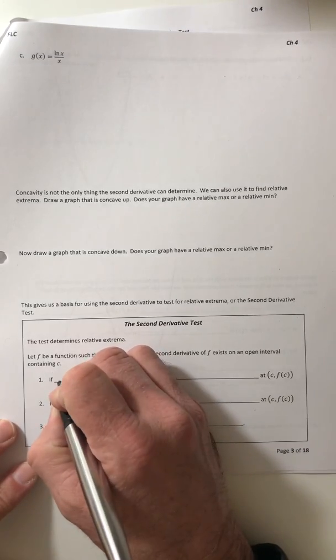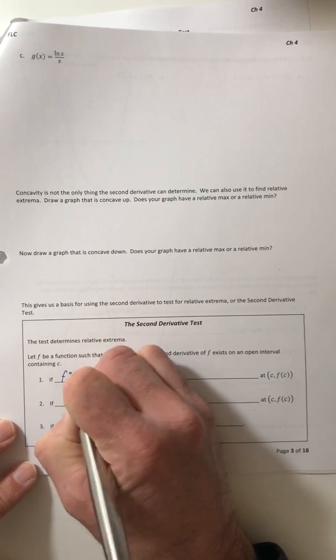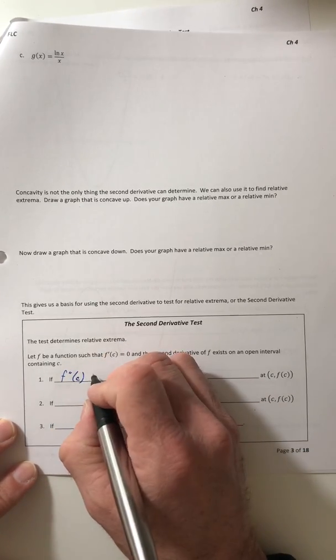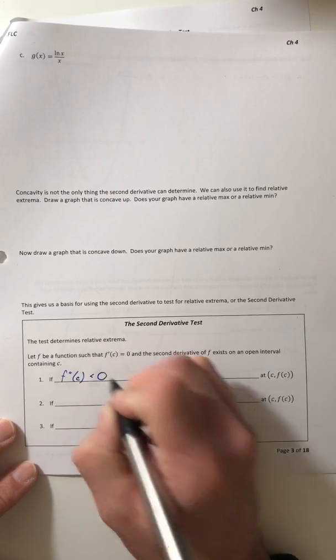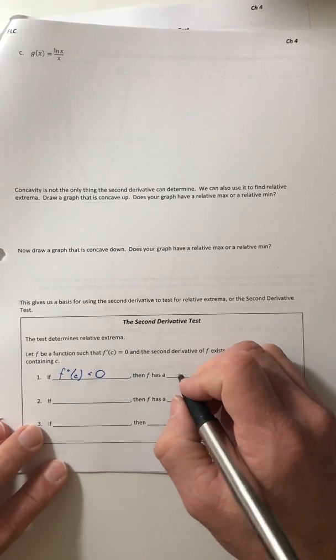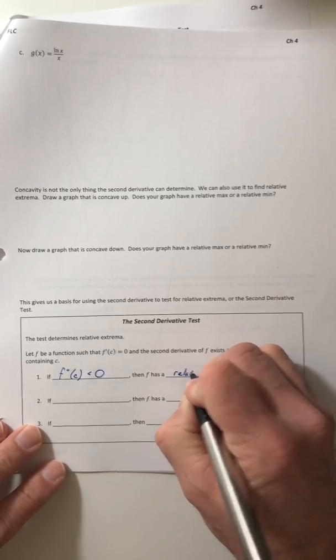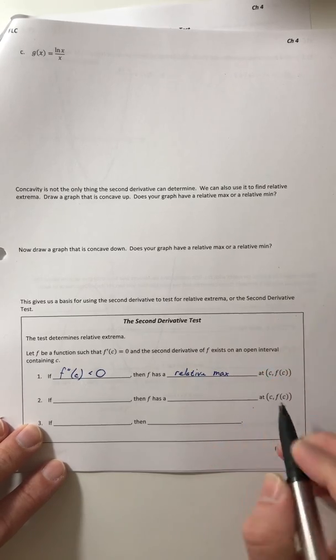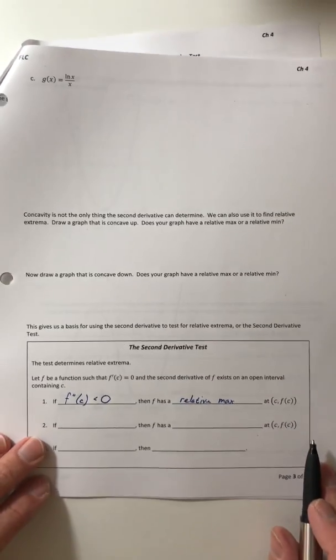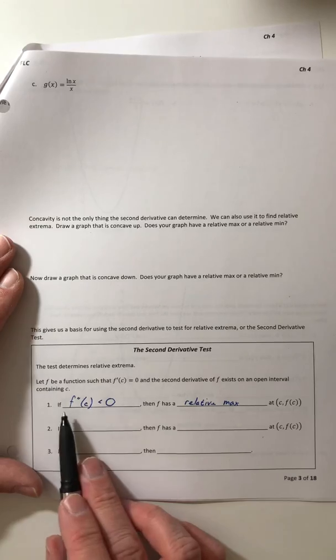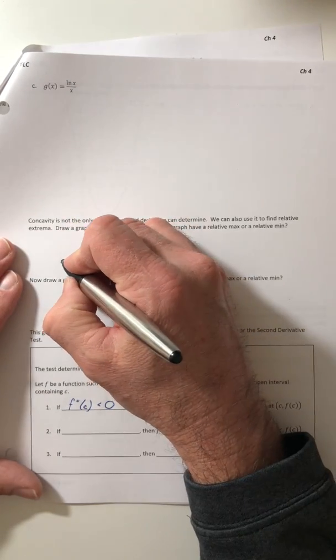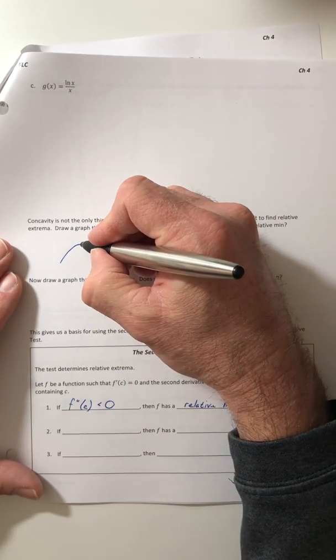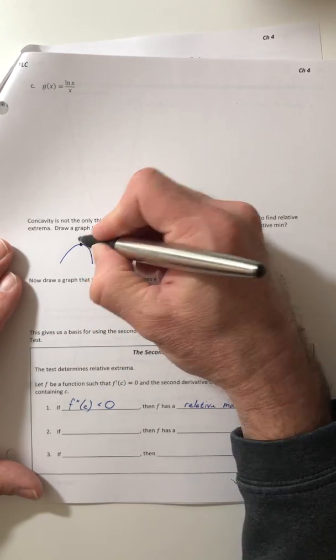So if the second derivative with that C plugged into it comes out as a negative, then F has a relative max at C, F of C. And it should kind of make sense because if the second derivative is negative, that means your graph is pretty much concave down, which means you've got a relative max sitting up at the top.